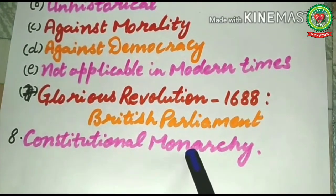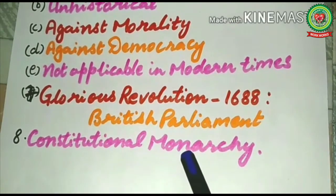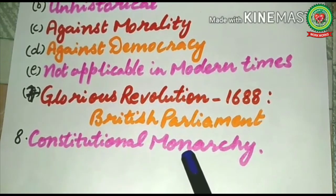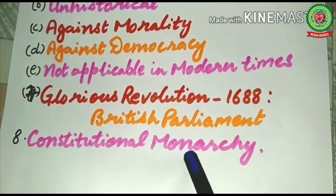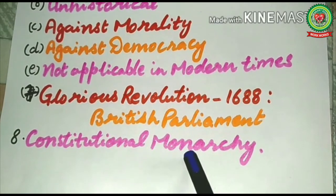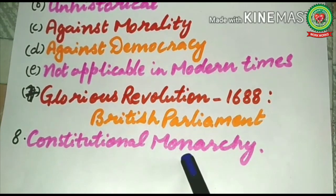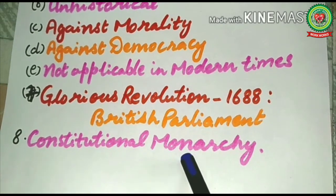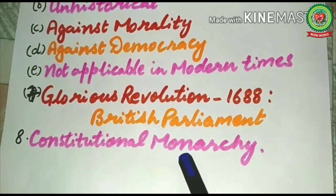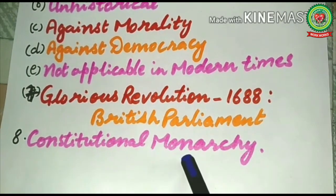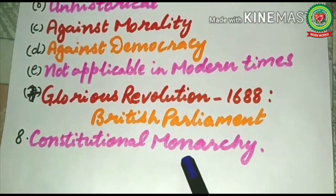Monarchy lives on as constitutional monarchy in countries like Malaysia, Belgium, Denmark, Japan, Netherlands, Norway, Spain, and Sweden. Divine theory is not working in these states — these countries have their own constitutions, and the constitution is supreme. So the divine origin theory of the state is now rejected in favor of constitutional governance.